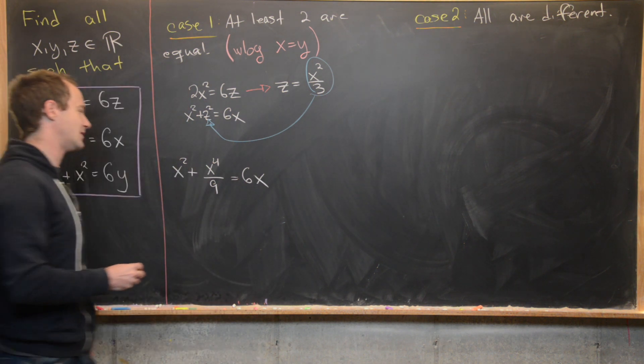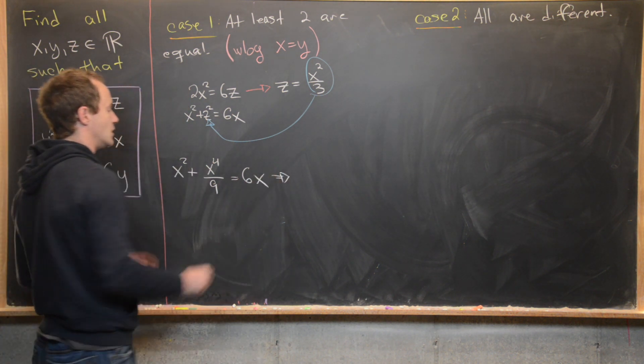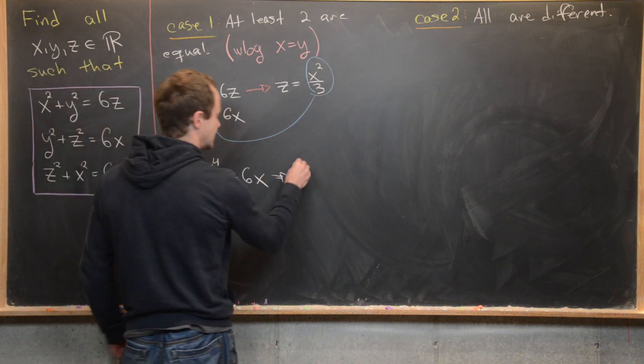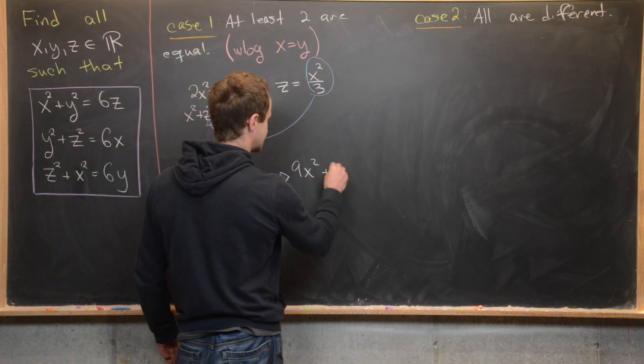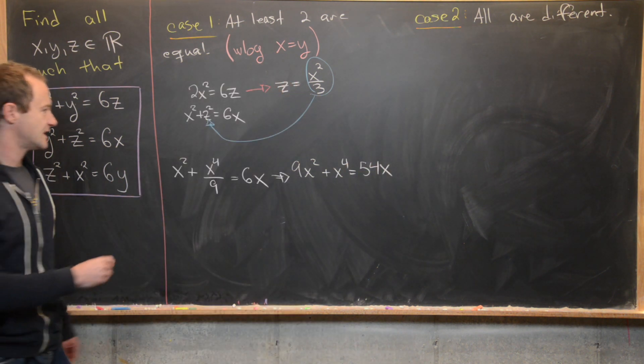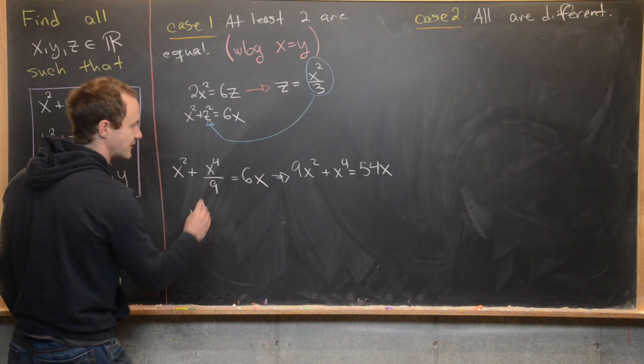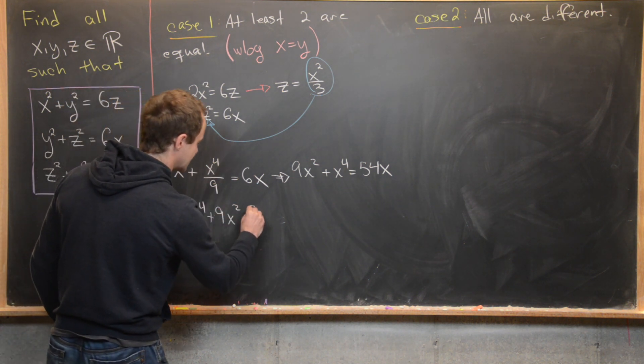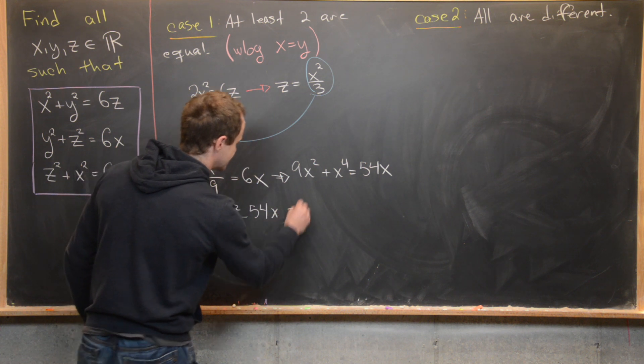We can clear denominators here pretty easily by multiplying both sides of the equation by 9, and that'll give us 9x² + x⁴ = 54x. Now moving things around, we'll have x⁴ + 9x² - 54x = 0.